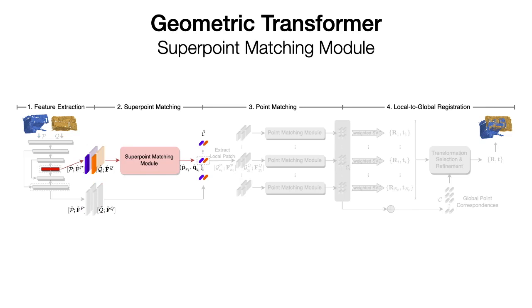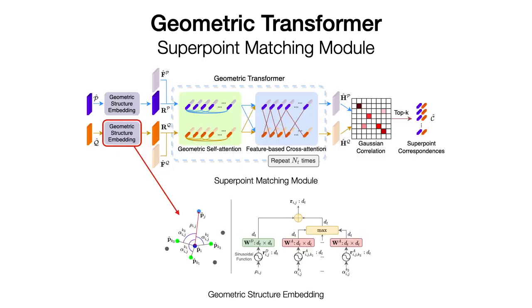Next, we design a transformer-based superpoint matching module which models the intra-point cloud geometric structure and the inter-point cloud geometric consistency to extract high-quality superpoint correspondences. To encode the global geometric structures in a transformation invariant manner, we design a novel geometric structure embedding which encodes pairwise distances and the triplet-wise angles among the superpoints. This embedding provides strong cues to learn geometric consistency between two point clouds.